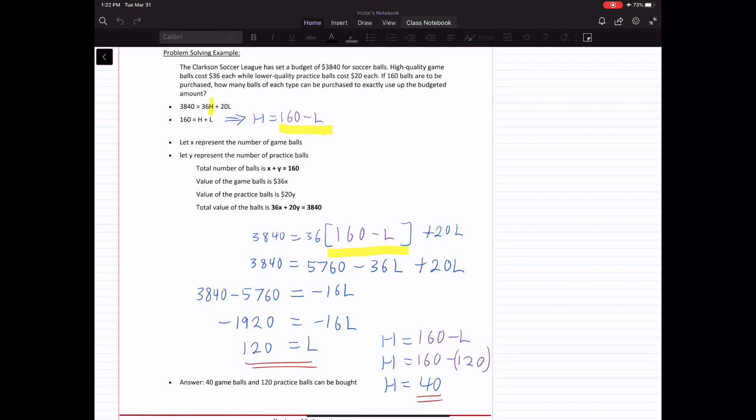Example 3, problem-solving example. The Clarkston Soccer League has set a budget of $3,840 for soccer balls. High-quality game balls cost $36 each, while low-quality practice balls cost $20 each. If 160 balls are to be purchased, how many balls of each type can be purchased to exactly use up the budgeted amount?